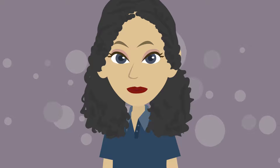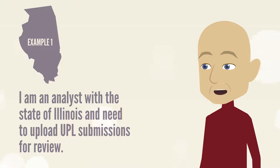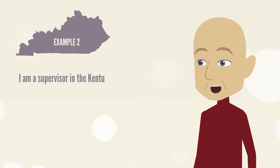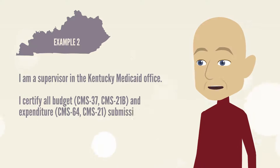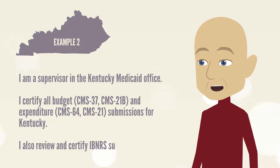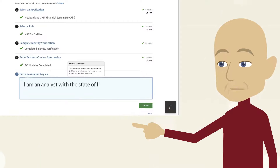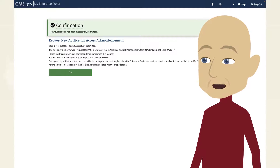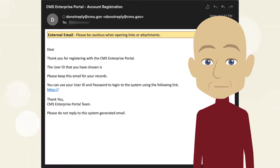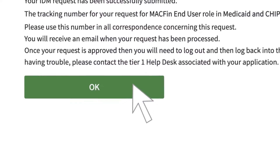Can you give me some examples? Sure. Example 1: I am an analyst with the state of Illinois and need to upload UPL submissions for review. Example 2: I am a supervisor in the Kentucky Medicaid office. I certify all budget, CMS-37, CMS-21B, and expenditure, CMS-64, CMS-21 submissions for Kentucky. I also review and certify IBNRS submissions. Enter your reason and click Submit. You'll see a confirmation message with a tracking number and information about accessing MACFIN after approval. You'll also receive a confirmation email. Click OK to complete Part 2 of the MACFIN access request process.